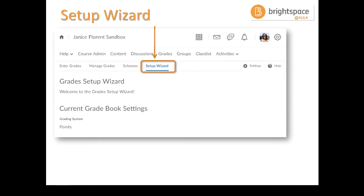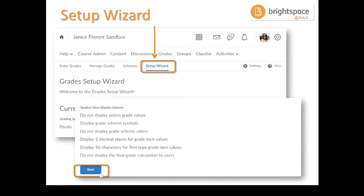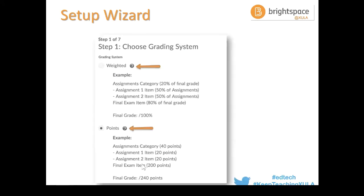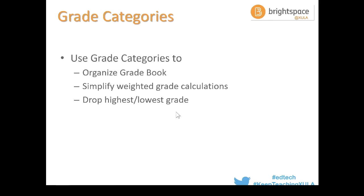Set it up the way you need it for that particular course on the front end. When you get into the course and reach the setup wizard, scroll down to the bottom of the screen and click the Start button. There are steps you have to go through to set up your various options. Here you would choose your grading system — notice if you have a weighted system you'd select the radio button for weighted. They even give you an example of what a weighted system looks like, and similarly an example of a point system.